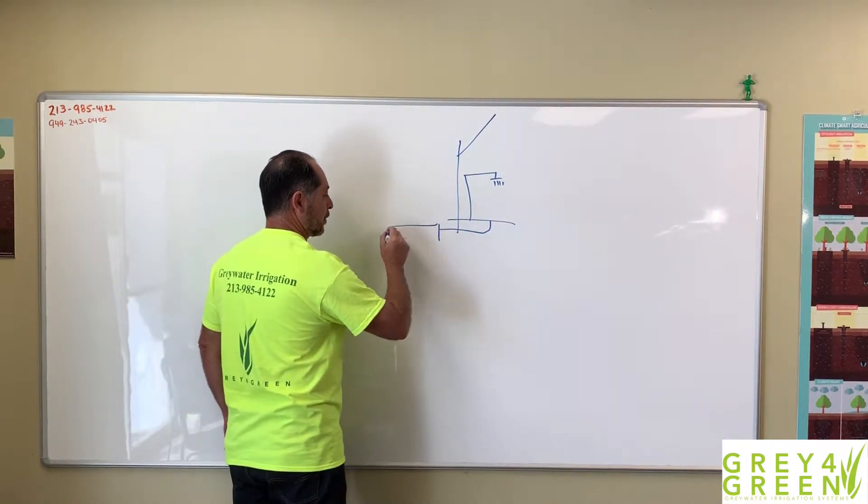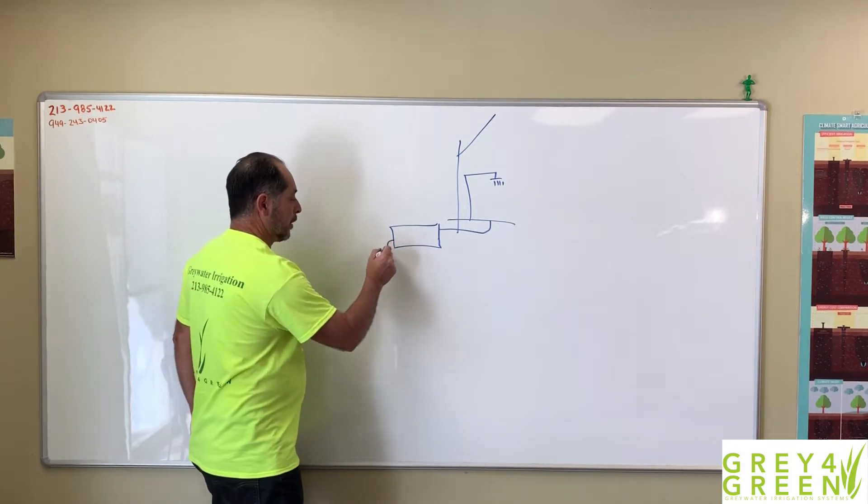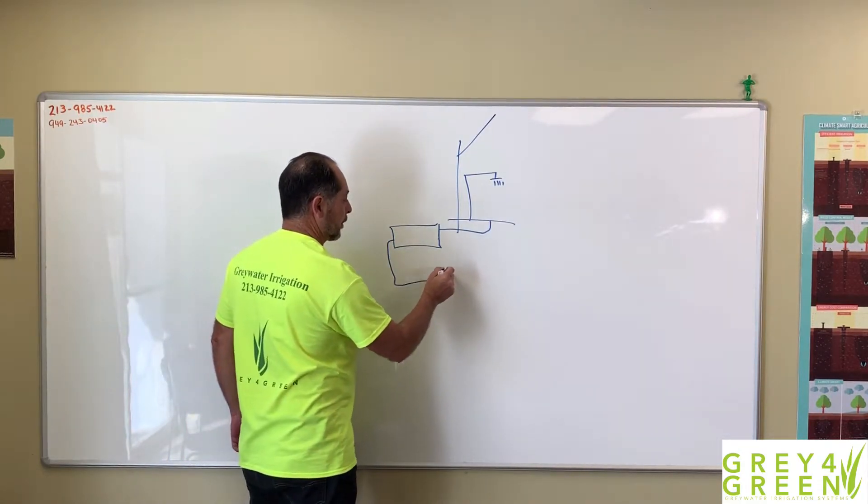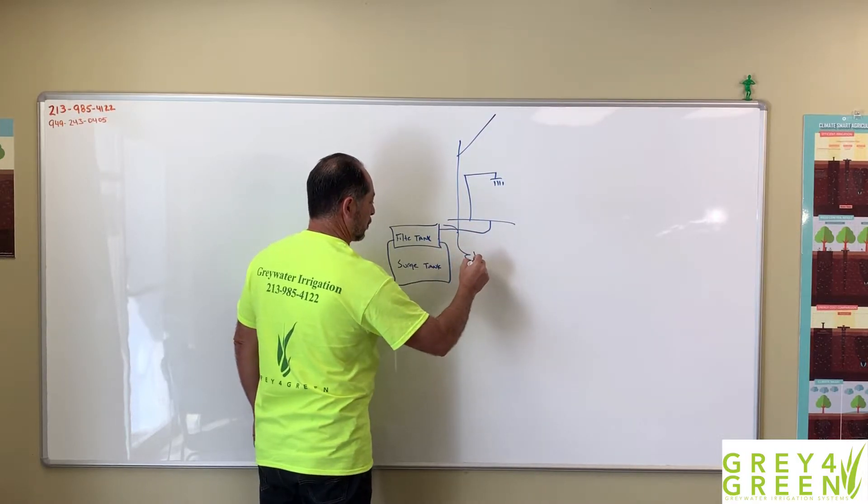This distribution unit is made up of a filter tank and below the tank is a surge tank. Together we call it the distribution unit.